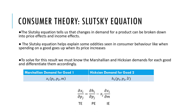In consumer theory, we also learn about the Slutsky equation. The Slutsky equation tells us that changes in demand for a product can be broken down into price effects and income effects. It can help explain some oddities in consumer behavior, like when spending on a good goes up when its price increases. To solve for this result, we must know the Marshallian and Hicksian demands for each good and differentiate them accordingly.